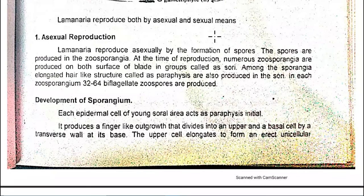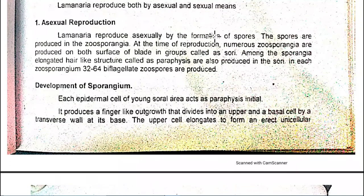For asexual reproduction, Laminaria reproduces asexually by the formation of spores. The spores are produced in the zoosporangia, which are found on both surfaces of the blade in groups called sori. The sori form on the blade surface — the laminar portion of the thallus.